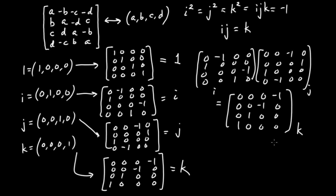So indeed, in the land of four-by-four matrices, I times J is equal to K. And I think that'll do it for this video. I thank you for watching, and if you enjoyed this video or any of my other videos, I encourage you to subscribe and stay tuned for more interesting videos.